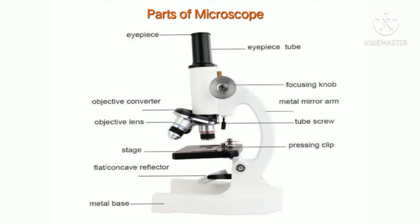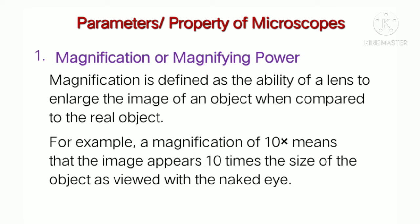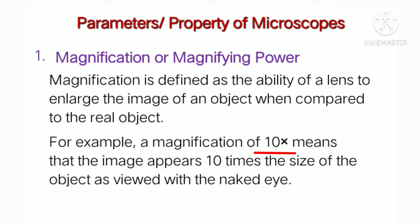Let's look at the basic and important properties of a microscope. The first important property is magnification, or magnifying power. Magnification is the ability of a lens to enlarge the image of an object compared to the real object. For example, if there is a magnification of 10x, the image appears 10 times the size of the actual object.